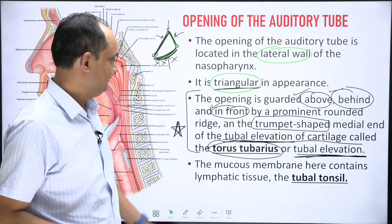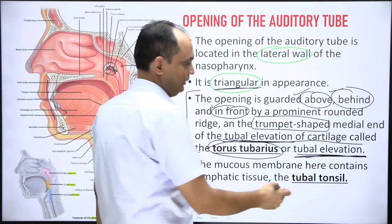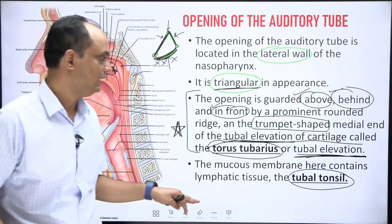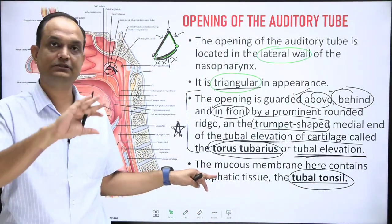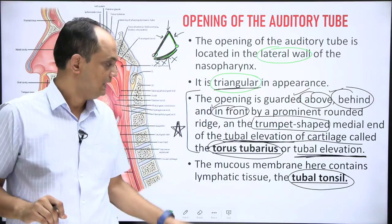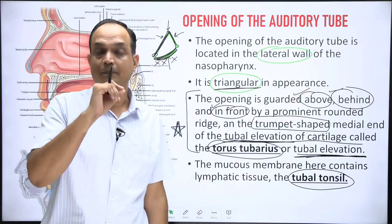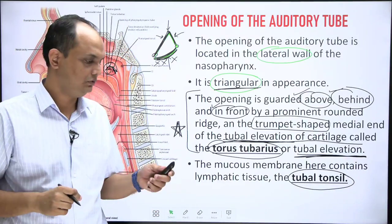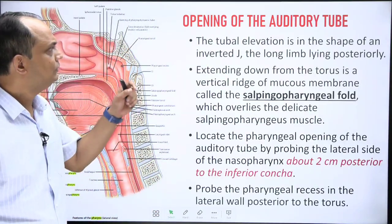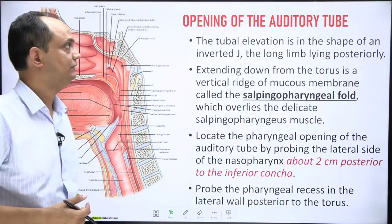There is one more important term: the tubal tonsil. The mucosa of the tubal elevation contains collections of lymphoid follicles. When this lymphatic tissue becomes prominent, it is known as the tubal tonsil.